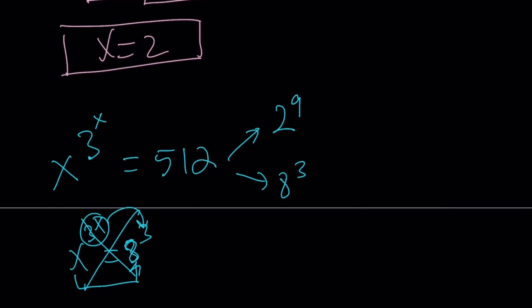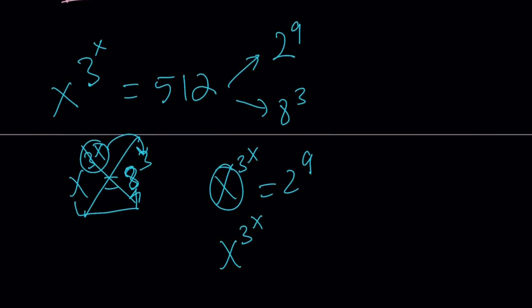How about 2 to the 9th power? Is that going to work? Well, can x be 2? Yes, the answer is yes because now we can write this as x to the power 3 to the power x equals 2 to the power 3 to the power 2. Therefore, the x values match. Make sense? And from here, we basically get x equals 2.